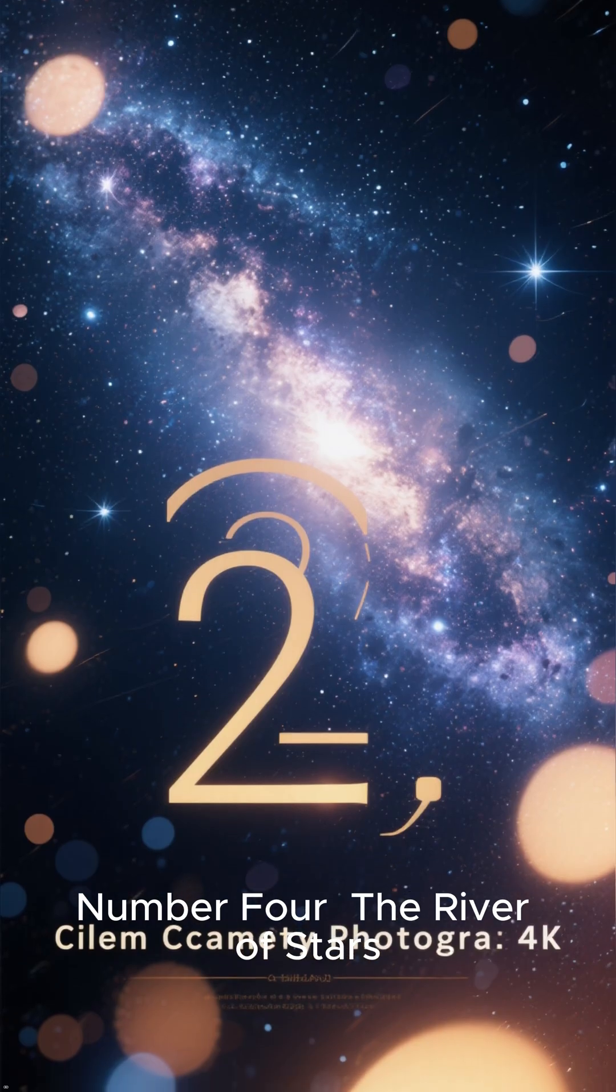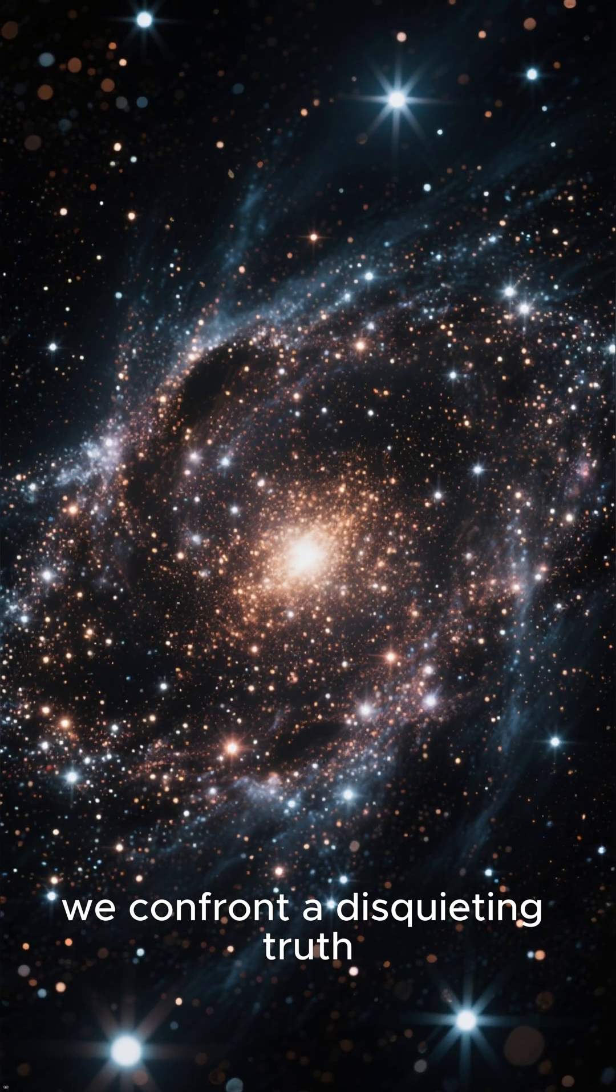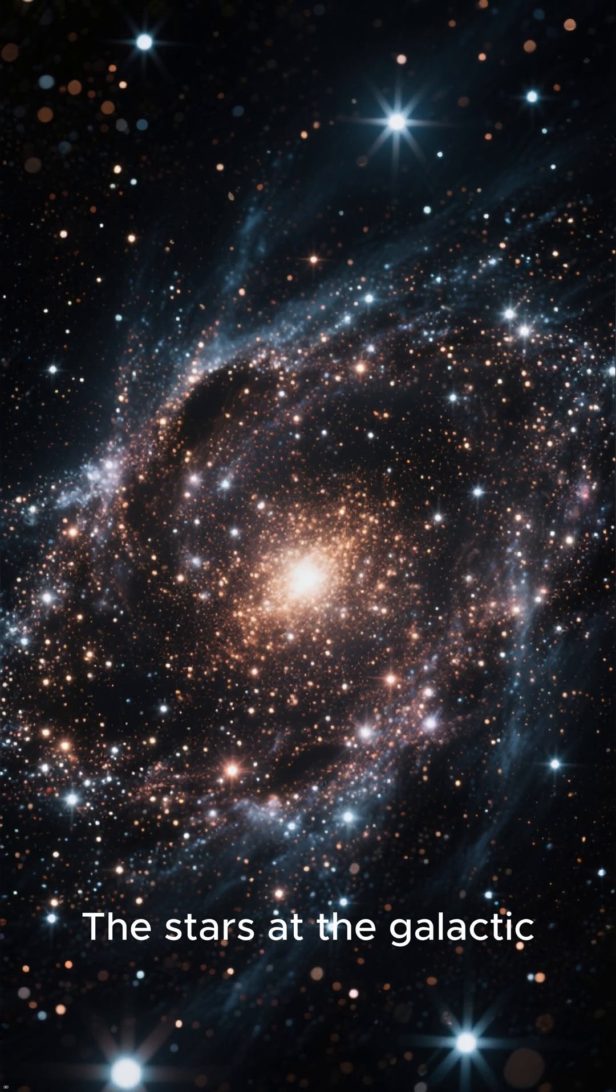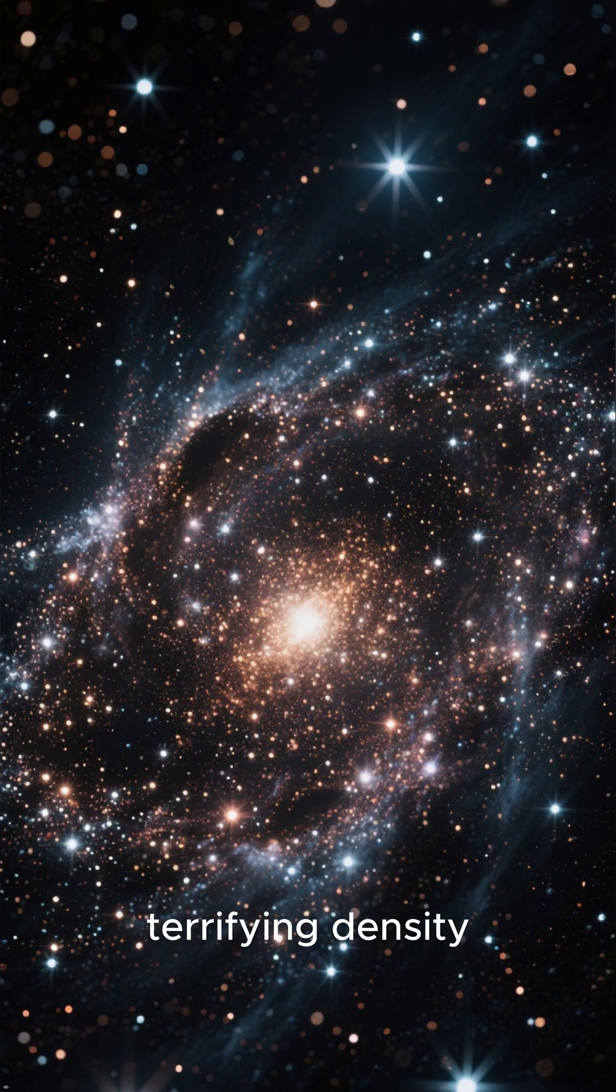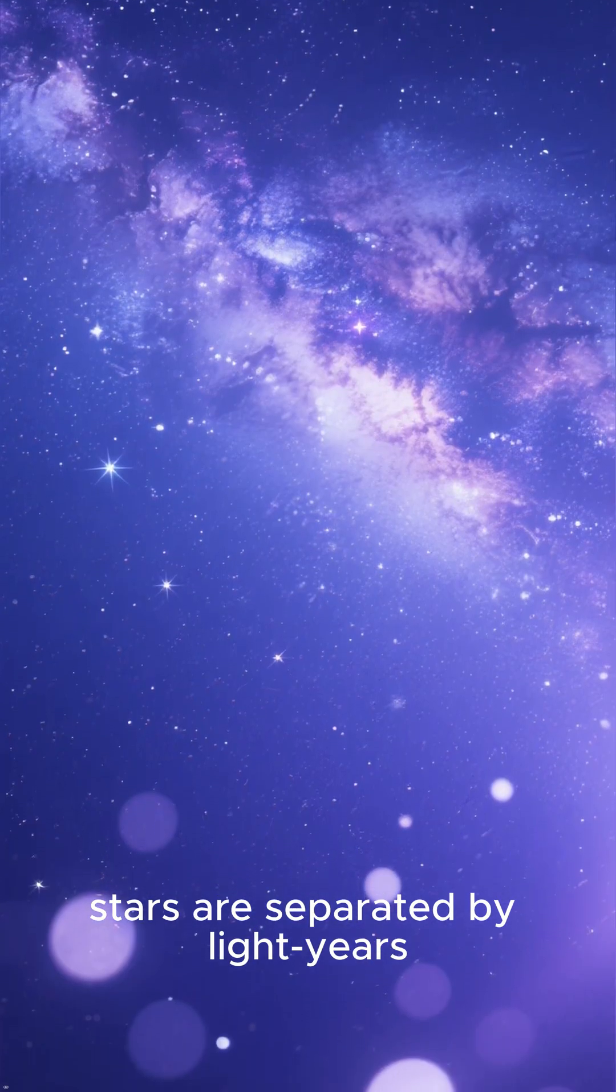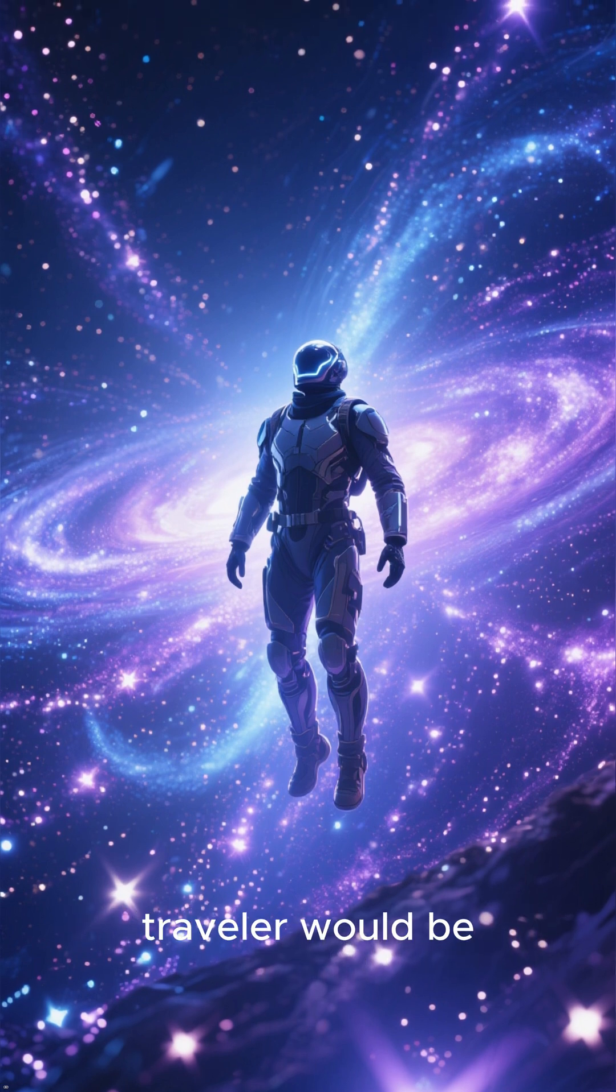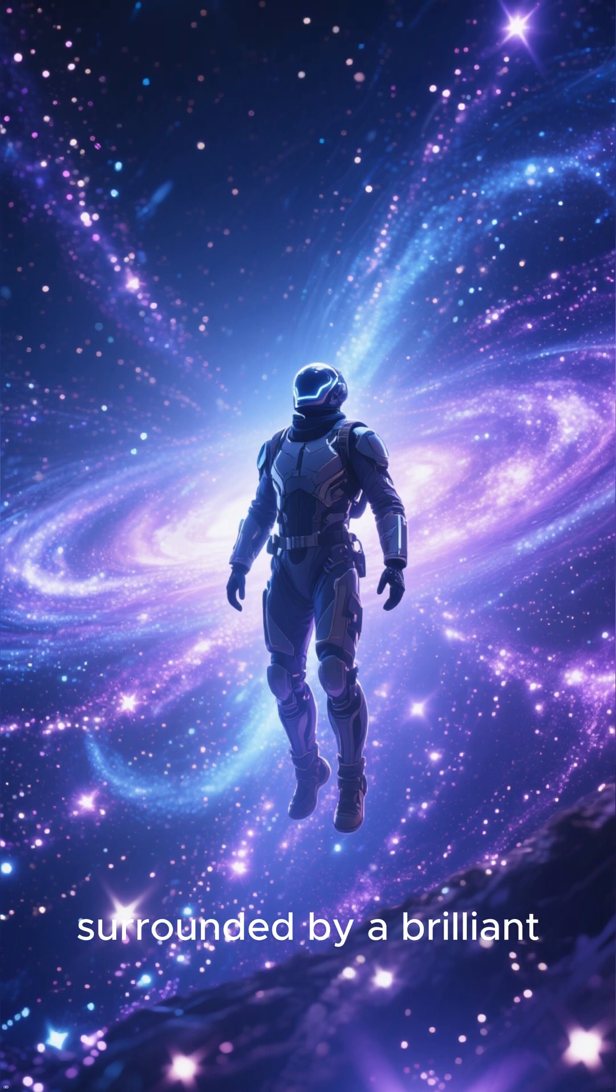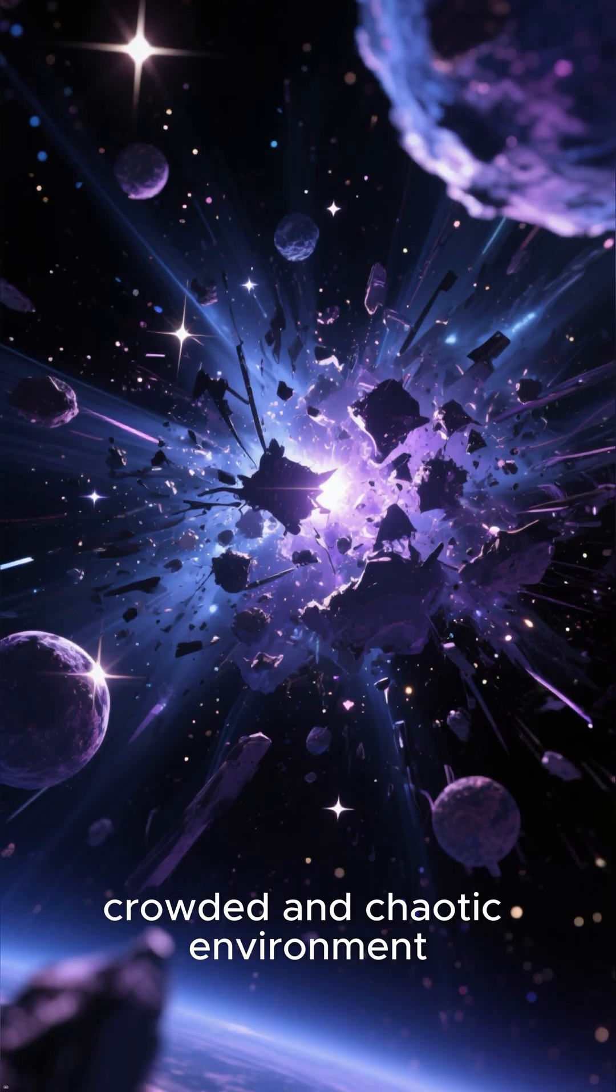Number 4. The River of Stars. Next, we confront a disquieting truth. The stars at the galactic center are packed with a terrifying density. In our part of the galaxy, stars are separated by light years. But at the core, they are so close together that a traveler would be surrounded by a brilliant river of stars. It is a frighteningly crowded and chaotic environment.